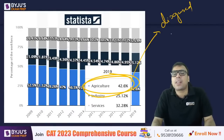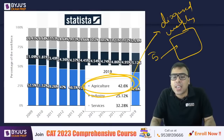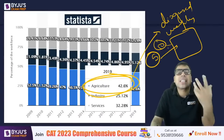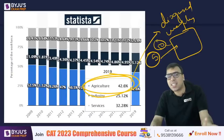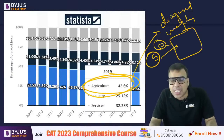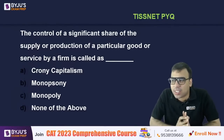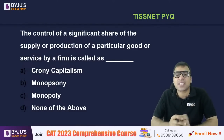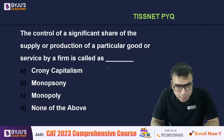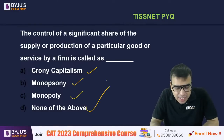In a land where five laborers are enough for tilling, ten people are working because the others have no alternative work — that is disguised unemployment. The contribution of agriculture to GDP is very low but employment generation is very high because of this. The next question: control of a significant share of supply or production of a particular good or service by a firm is called what? Options: crony capitalism, monopsony, monopoly, or none of the above.